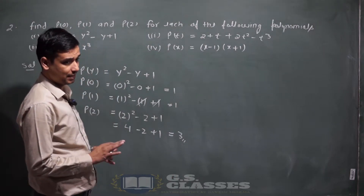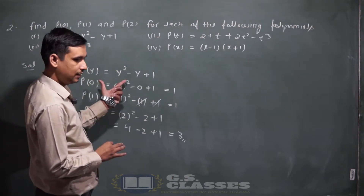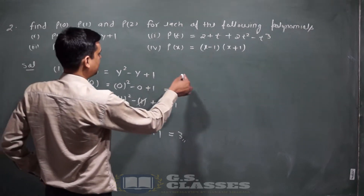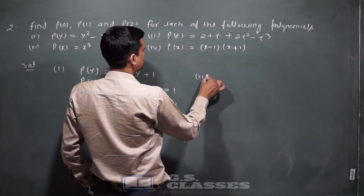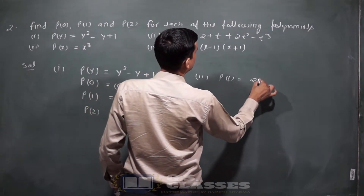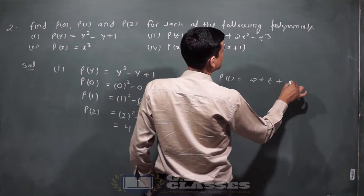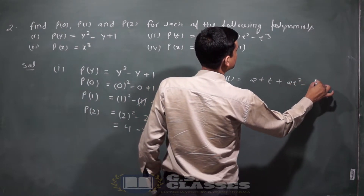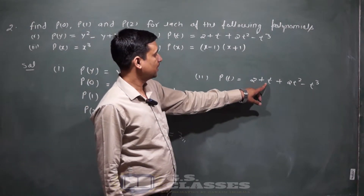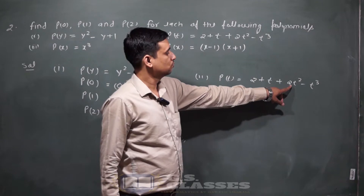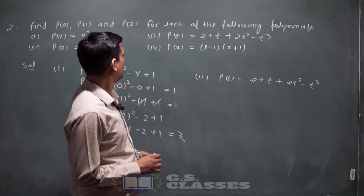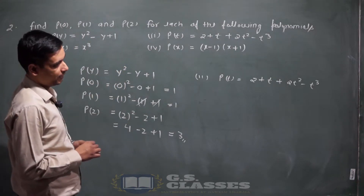Solve करना बिल्कुल आसान होता है। Polynomial given है, उसकी corresponding values निकाल ली। एक part के लिए तीनों values निकाल लीं। Second part दिखाता हूँ: p(t) = 2 plus t plus 2t square minus t cube given है।